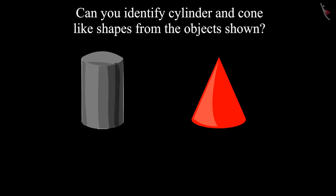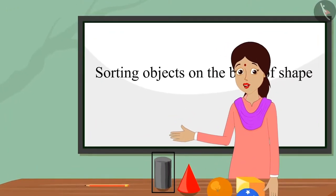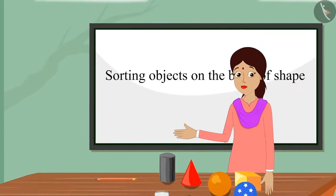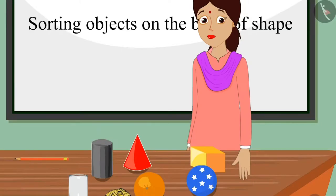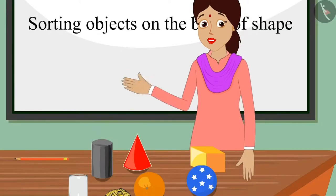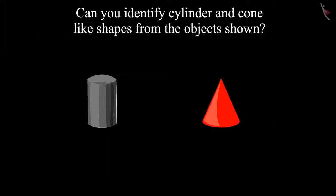Children, can you identify the shapes of these objects? Pinky answers: 'Its shape is like that of a cylinder.' Well done, Pinky — it is like a cylinder. Chotu answers: 'Its shape is like a cone.' Well done, Chotu — it has a cone like shape. Children, was your answer the same?